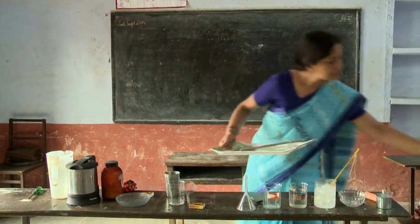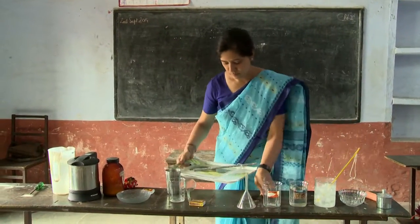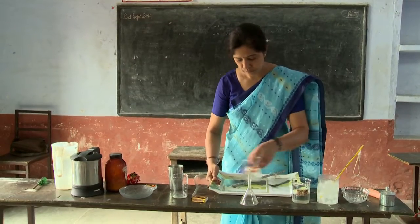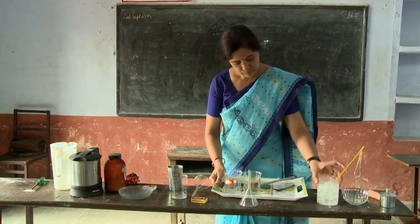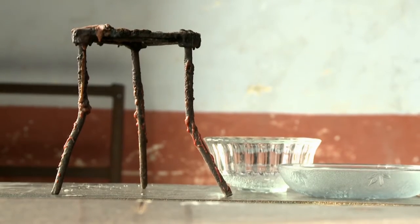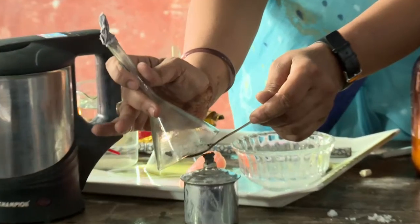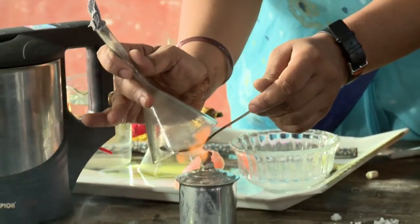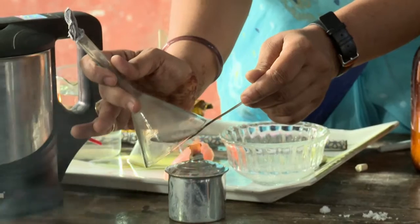In this secondary science class, the teacher explains how she planned a demonstration on states of matter. It is important to try experiments in advance, think about what questions to ask to engage your students, how to ensure everyone can see, and that the demonstration is safe.